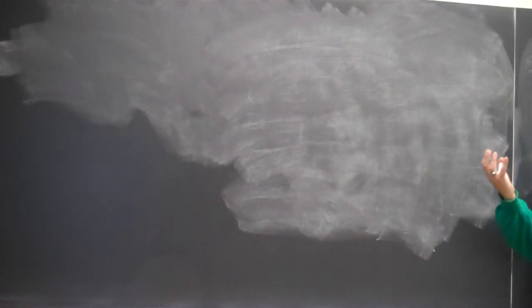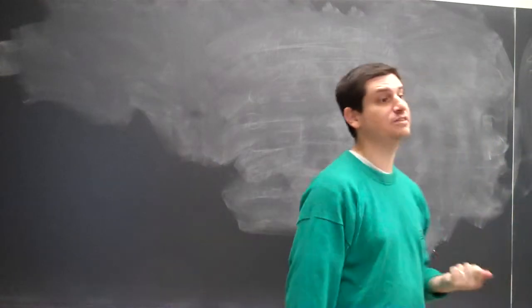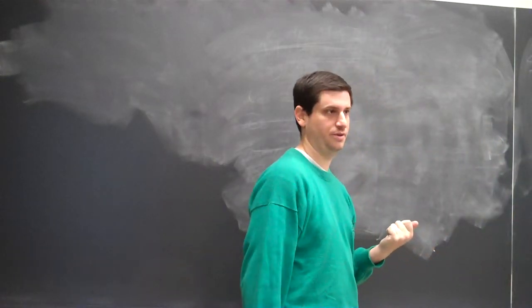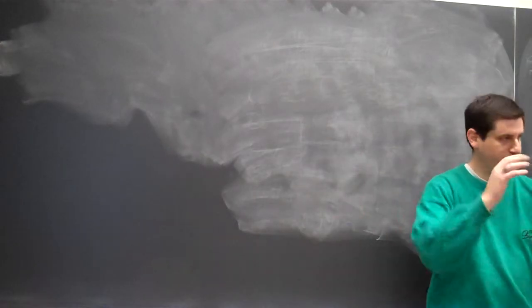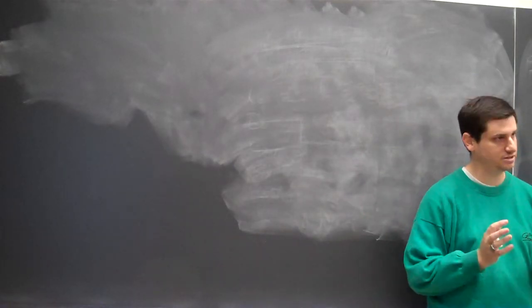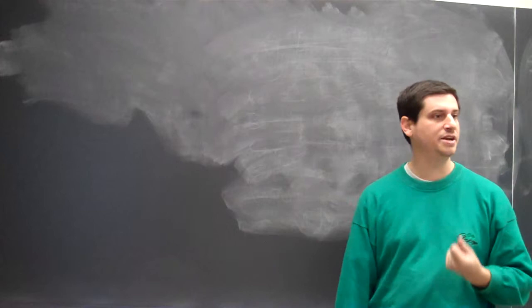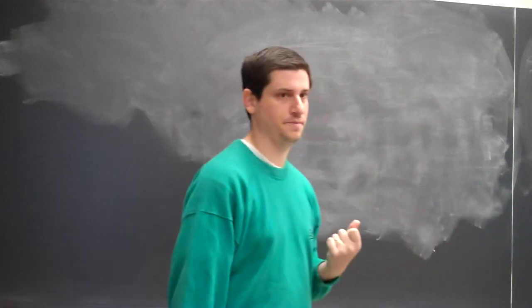Step one, recall, we showed that we could map our region one-to-one inside the unit disk. And then we could apply a map if we wanted to, and we could then say zero is now inside our region. Step two was we looked at all maps from that region inside the disk to the disk, and we picked the one that had the largest derivative at the origin.